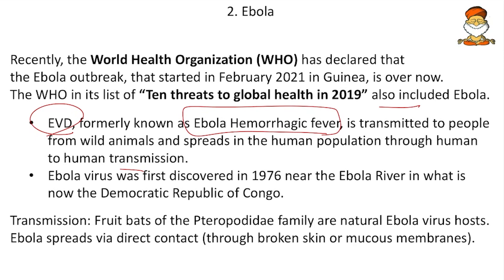Hemorrhagic fever involves blood clotting that occurs in the brain, causing intense headache — that is why it is called hemorrhagic fever. The Ebola virus was first discovered in 1976 near the Ebola River in what is now the Democratic Republic of Congo.